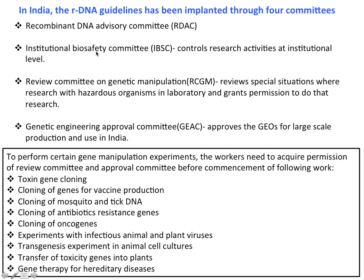The RDNA guidelines have been implemented through four committees: the Recombinant DNA Advisory Committee (RDAC), Institutional Biosafety Committee (IBSC), Review Committee on Genetic Engineers (RCGM), and Genetic Engineering Approval Committee (GEAC). To perform certain gene manipulation experiments, scientists need to acquire the permission and approval of these committees. This is required for work such as toxin gene cloning, cloning of genes for vaccine production, cloning of mosquito or tick or exotic DNA, cloning of antibiotic resistant genes, cloning of oncogenes, gene therapy, or hereditary disease research.